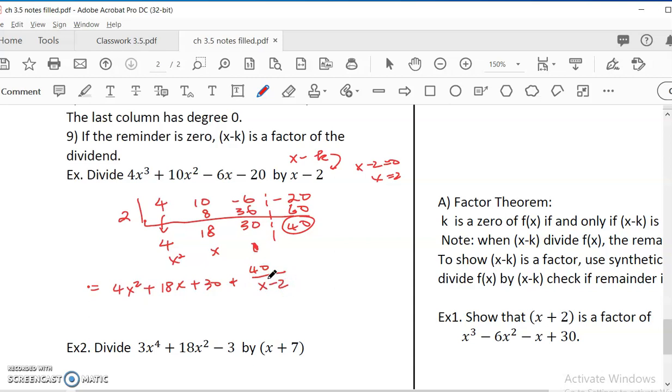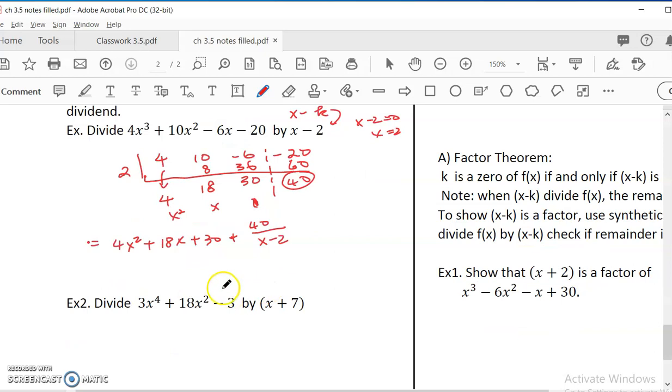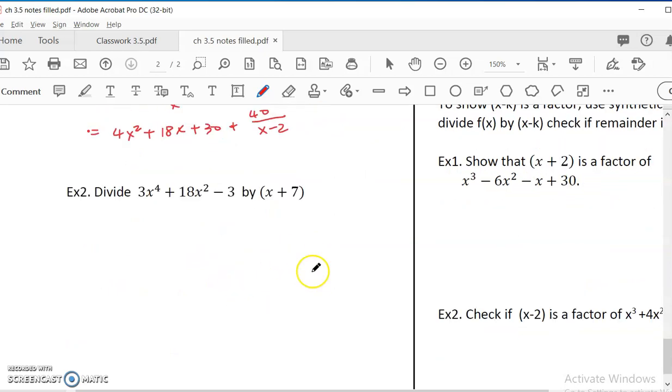So you can see how much faster it is. Let's do another one. This one, I have some terms that's missing. The first term is x to the 4th. That's fine, because it's the highest degree. But I don't have x cubed, so I have to insert it. I don't have x term, so I have to insert it. So I end up having 3, 0, 18, 0, negative 3 in my dividing box. And then, because this should be x minus k, my k should be negative 7.